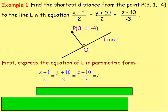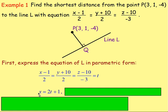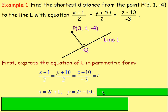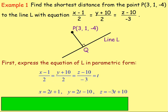Let's bring in the parameter T. For x: if (x − 1)/2 = T, multiply both sides by 2 and add 1, so x = 2T + 1. For y: multiply both sides by 2, giving y + 10 = 2T, then subtract 10, so y = 2T − 10. For z: (z − 10)/(−3) = T, multiply both sides by −3, so z − 10 = −3T, then add 10, giving z = −3T + 10.